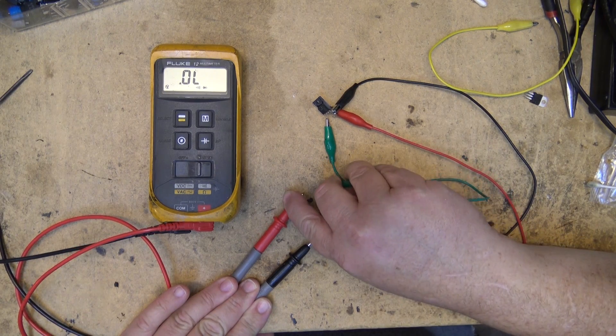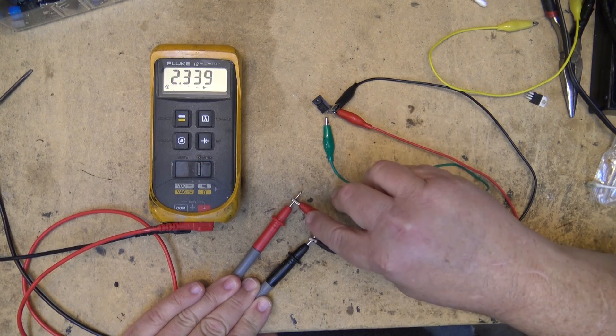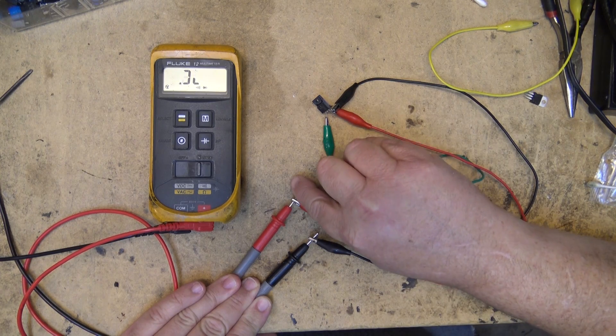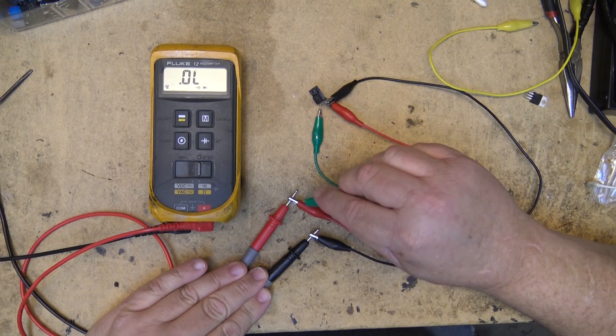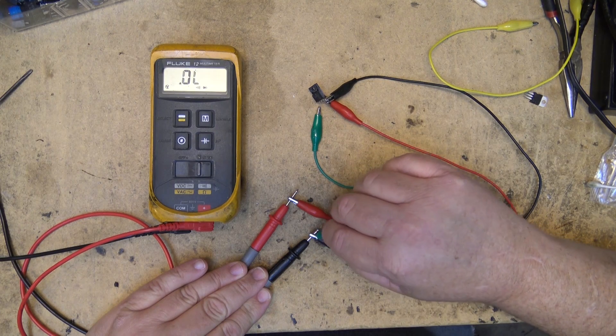Or I can just touch the meter itself. Off, on, off, on. That's how you test a MOSFET with a meter. Real simple to do.